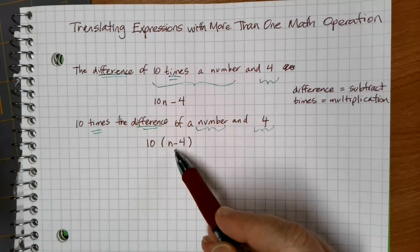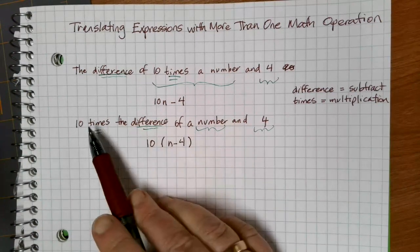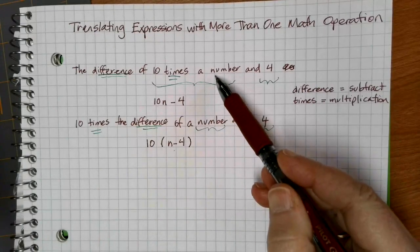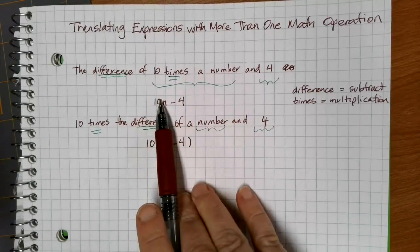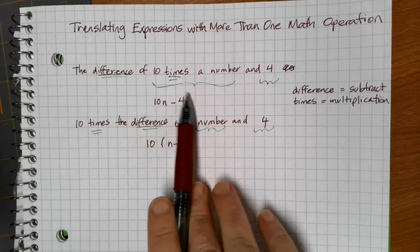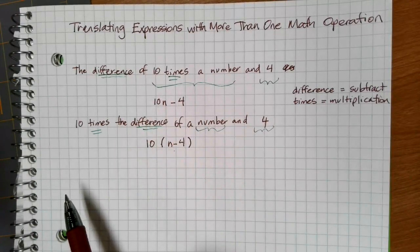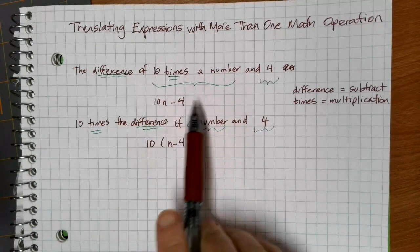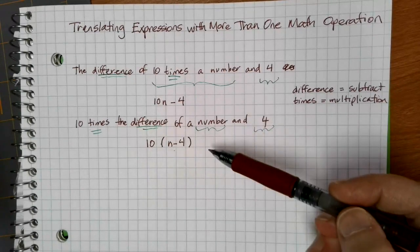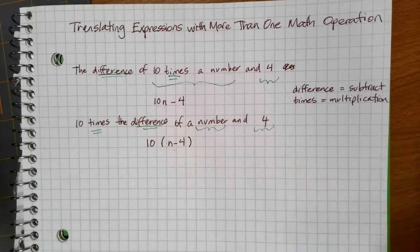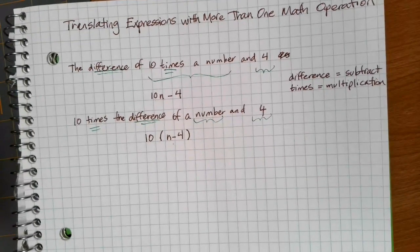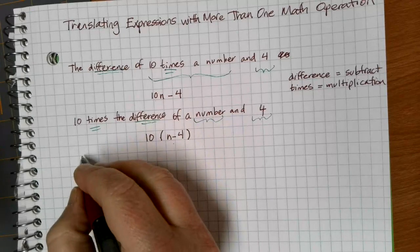We can use parentheses to force an operation to come first in our order of operations. Here, I'm going to force the n minus 4 to find the difference first, and then find 10 times that answer. Up in the first expression, I wanted to find 10 times the number first, and then find the difference of that and 4. So these end up being different values, even though they use similar terminology.